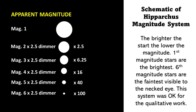That means stars in the first magnitude class are around 2.5 times brighter than stars in the second magnitude class. Similarly, stars in the second magnitude class are on average 2.5 times brighter than stars in the third magnitude class.